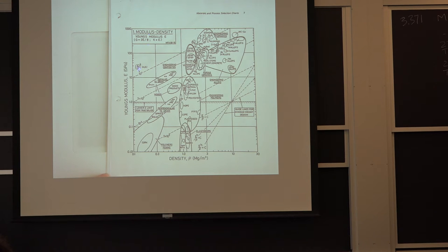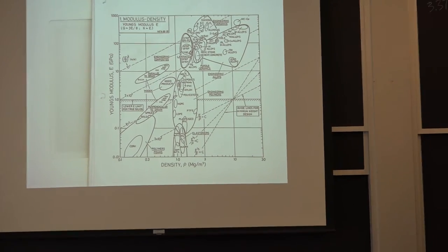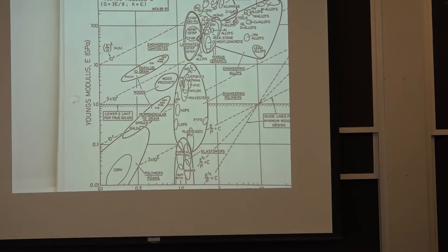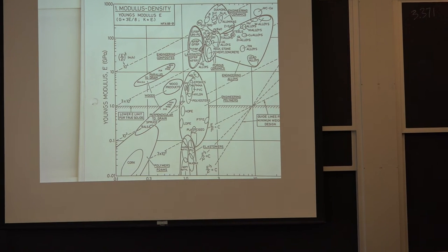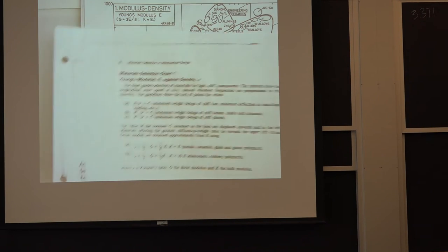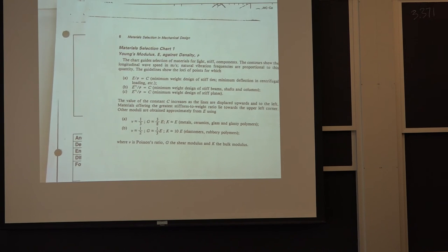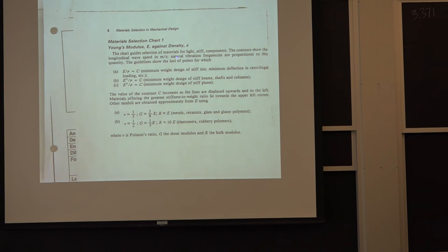It turns out E over rho, Young's modulus divided by the density, shows up in a lot of mechanical property formulas. In fact, if you look at the page before this in his book, under material selection, Young's modulus E against density rho, E over rho equal to some constant will be minimum weight design for stiff ties.